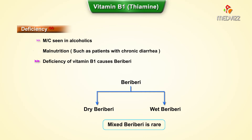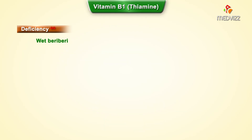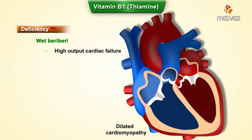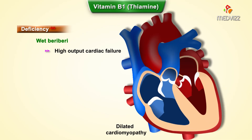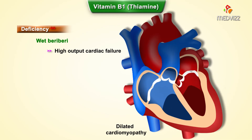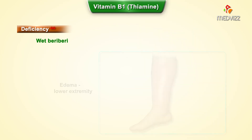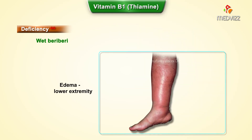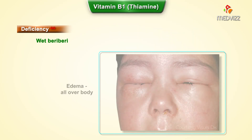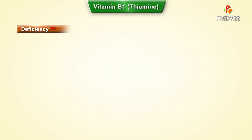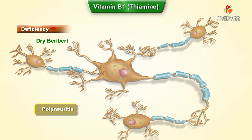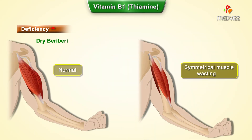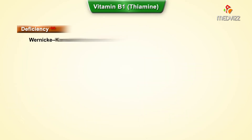In wet beriberi, the patient presents with high output cardiac failure, including dilated cardiomyopathy and edema — especially in the lower extremities — which can later spread throughout the body. Dry beriberi presents with neurological manifestations such as polyneuritis and symmetrical muscle wasting.